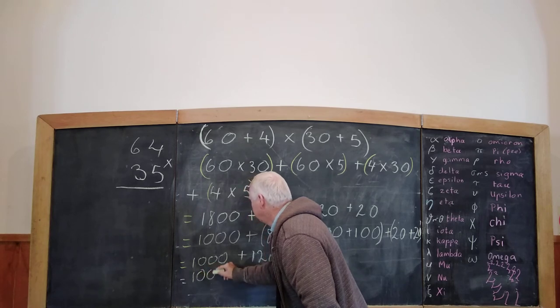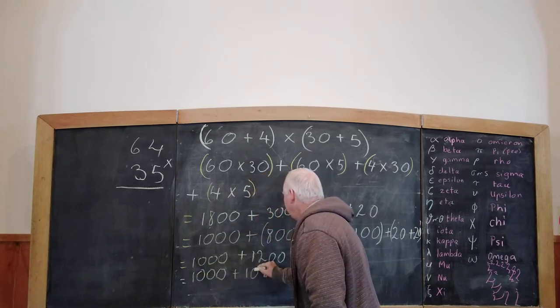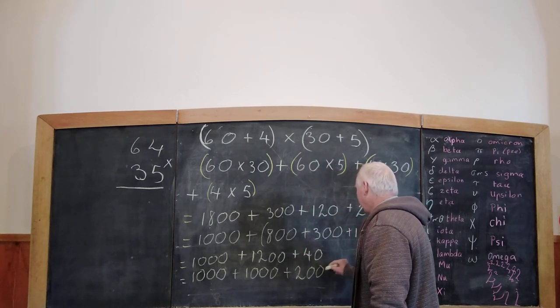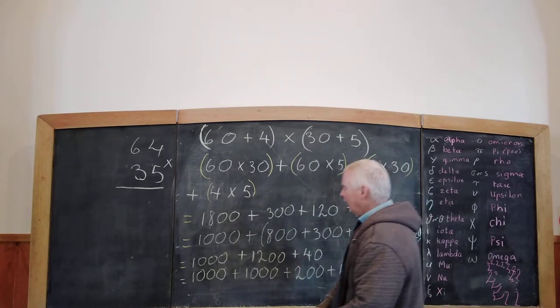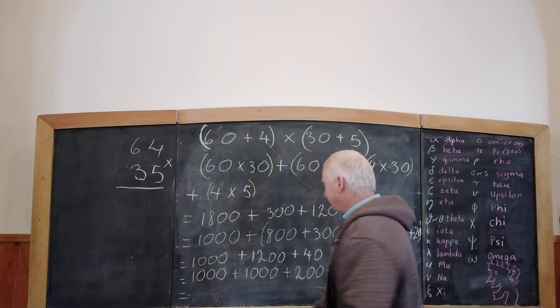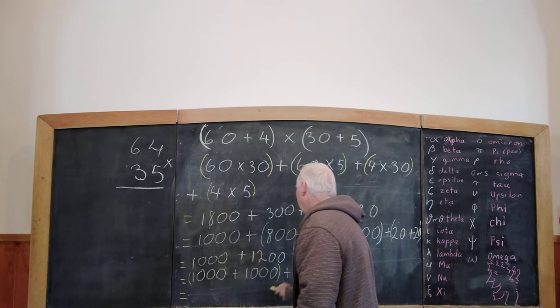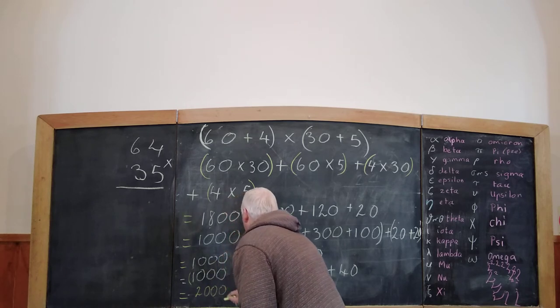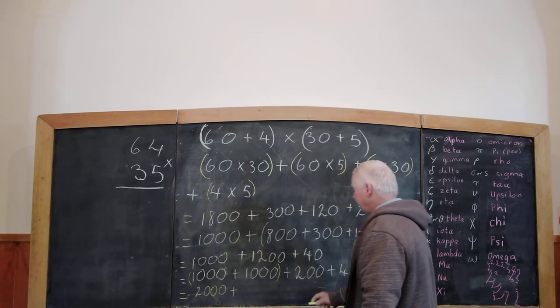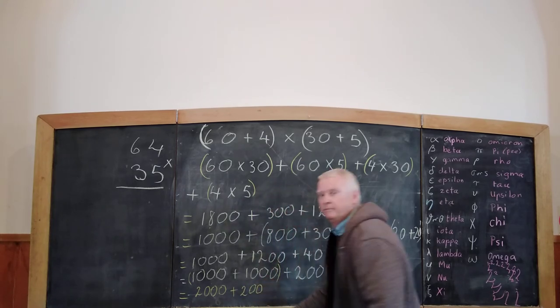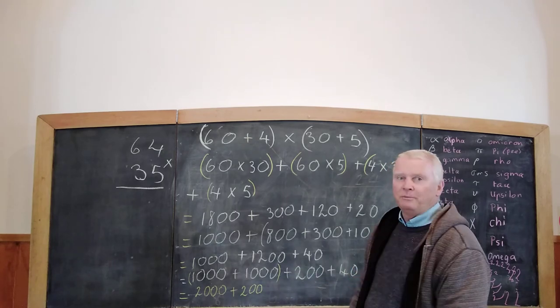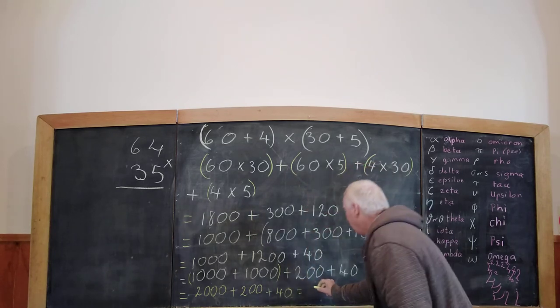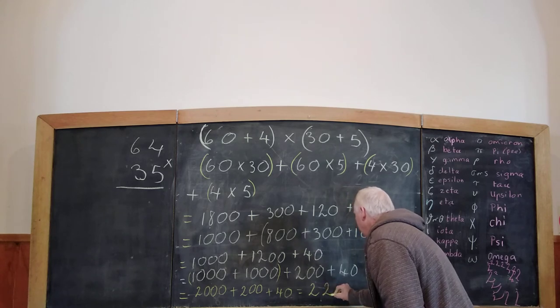Then, we expand this: 1000 plus 1000 plus 200 plus 40. The equals. So, we group these two together. 1000 plus 1000, that's 2000. Plus 200 and a little red caboose on the end. Last 40 equals 2240.